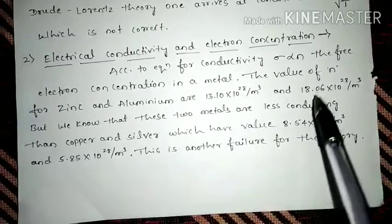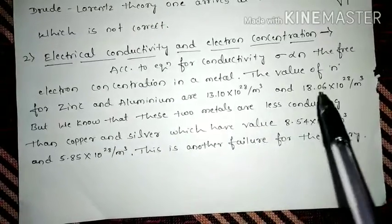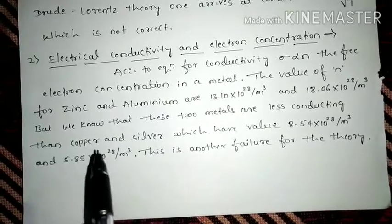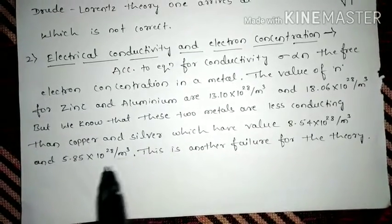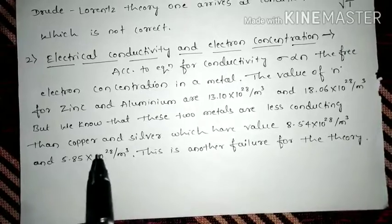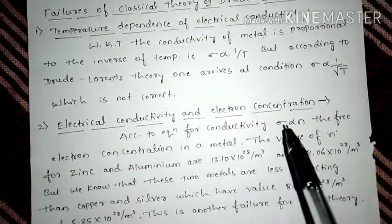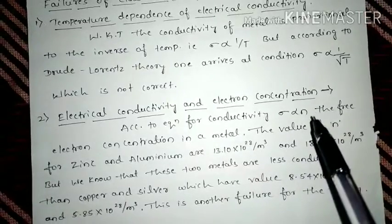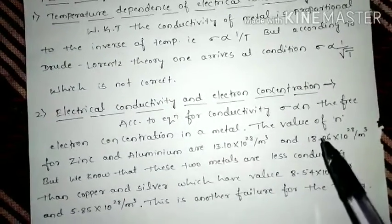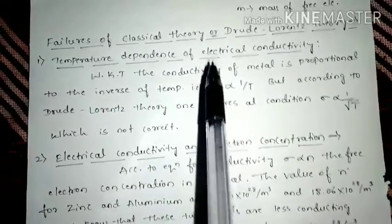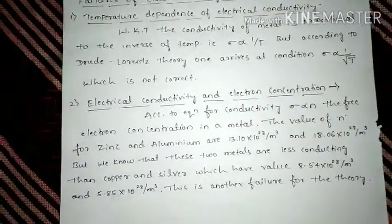Now you can see, zinc and aluminum are having the higher electron concentration but they are treated as poor conductors. Copper and silver having lower electron concentration but they are treated as good conductors. So which means that the electrical conductivity is not only dependent on n. It is dependent on other parameters which cannot be explained by the classical theory. And that is the reason this theory has been discarded.